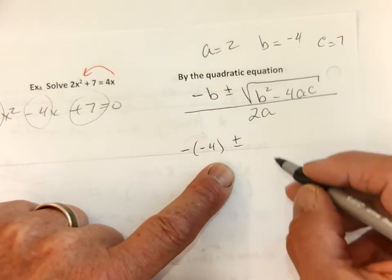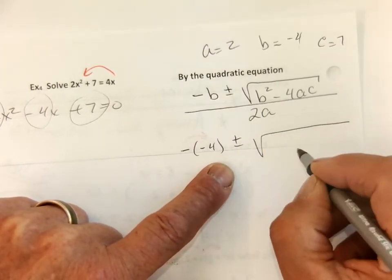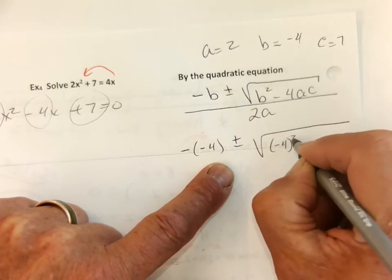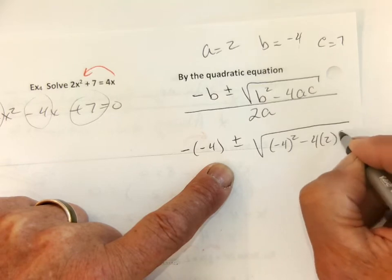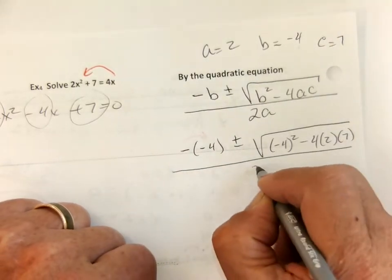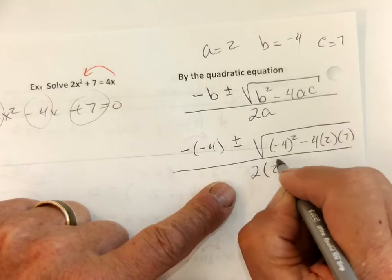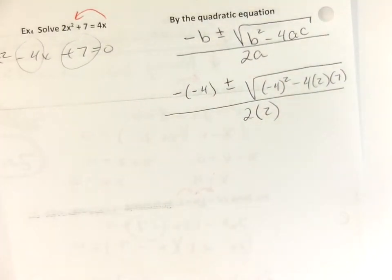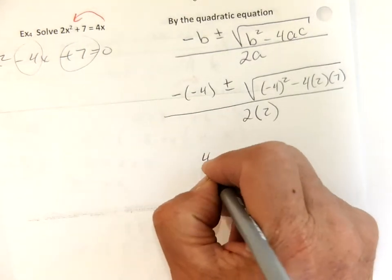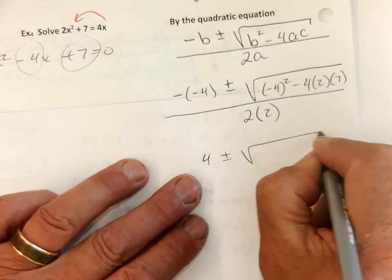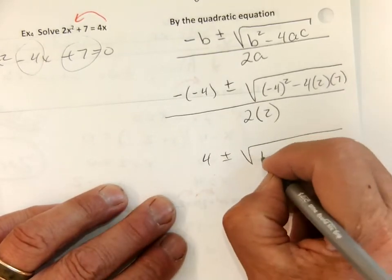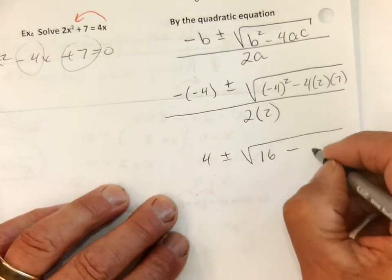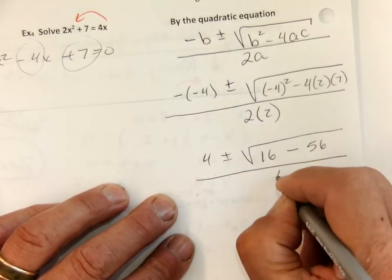So negative b, negative negative 4, plus or minus. You know why it's plus or minus? Because I have two answers. Square root b squared, which is negative 4 squared, which is positive, minus 4 times a, which is 2 times c, which is 7, all over 2 times 2. Double negative makes positive 4 plus or minus the square root. Negative 4 times negative 4 is positive 16, minus 56 over 4.